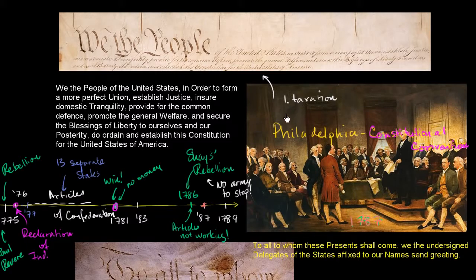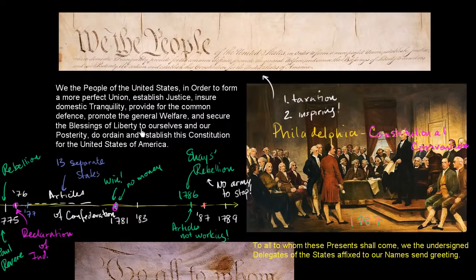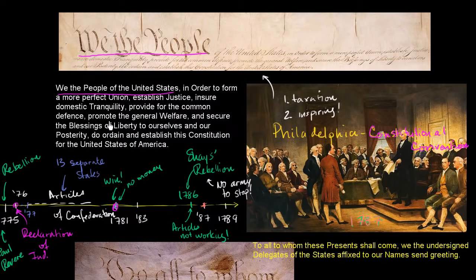The Constitution has a preamble that is a whole lot more inspiring than the Articles of Confederation, which said 'to all to whom these presents shall come' — essentially 'to whom it may concern.' Let's look at the preamble. It starts: 'We the people of the United States.' Just those first three words are totally inspiring. It's never been done before — we the people get to create this Constitution. It's not the states getting together, not the king devolving authority, not a parliament doing it.